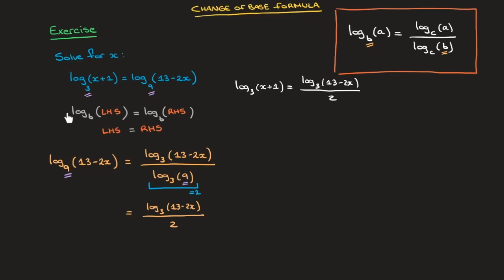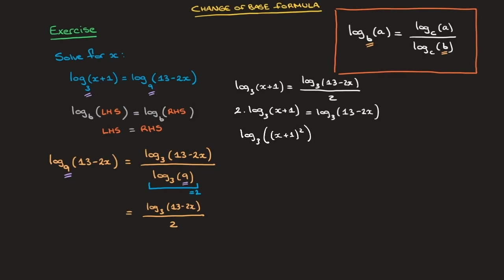Remembering that what we're aiming for requires getting rid of this 2, I multiply both sides of this equation by 2, which leads to 2 times log base 3 of x plus 1 equals log base 3 of 13 minus 2x. I now place this 2 as an exponent inside the logarithm, which leads to log base 3 of (x plus 1) squared equals log base 3 of 13 minus 2x.